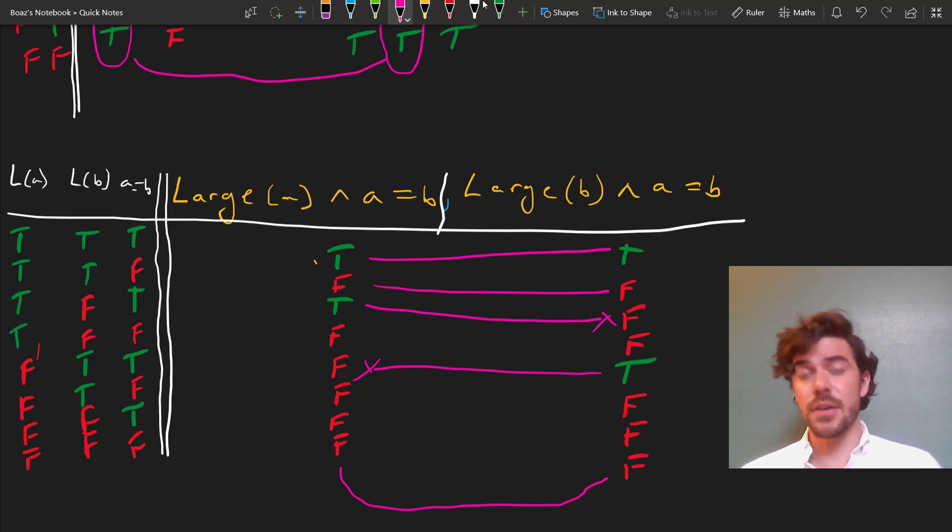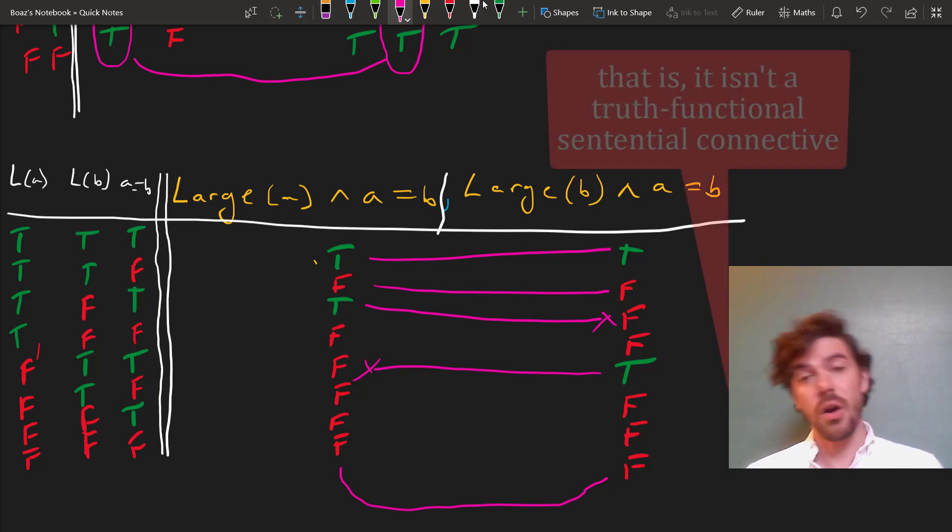So truth tables can tell you that something is a tautological equivalence, but they can't show you that it's not a logical equivalence. Part of the reason for this, if you're curious, is that equals is itself not a logical symbol at all. It's a predicate, as we discussed earlier on in the course.